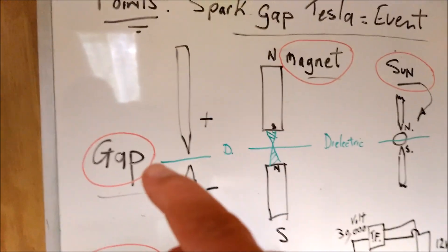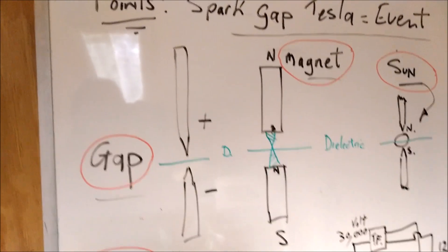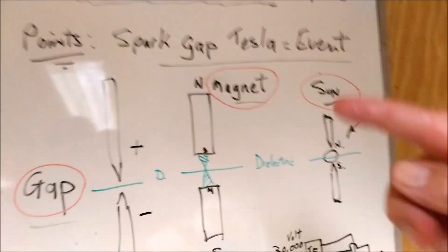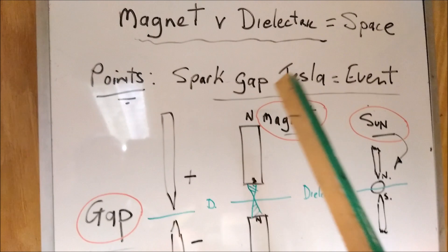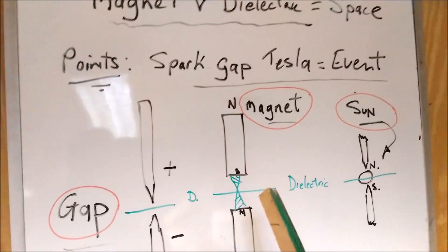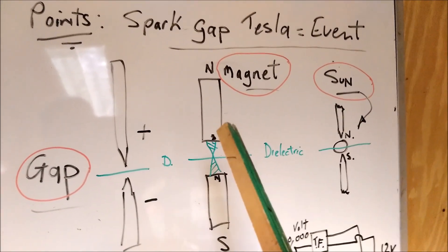If we start here, you have potential either side, and the bigger the potential, the spark jumps at the dielectric when the dielectric gives way and lets a spark potential jump across. If we look at a bar magnet with a north and a south, that's one bar magnet.